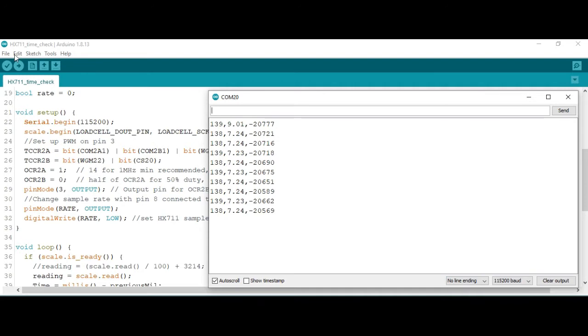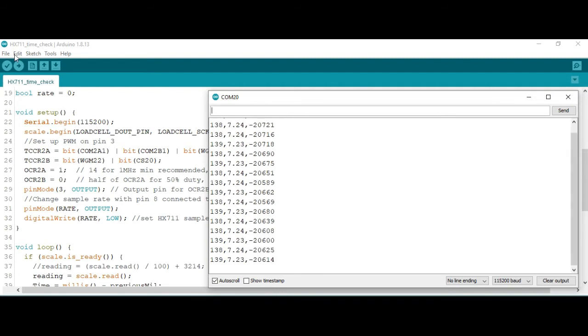And finally this is with the maximum PWM possible from a typical Uno or Nano which is 8 megahertz, and so we're getting around 7 samples per second with a rate of 0, and around about 58, 17 to 18 milliseconds between samples.